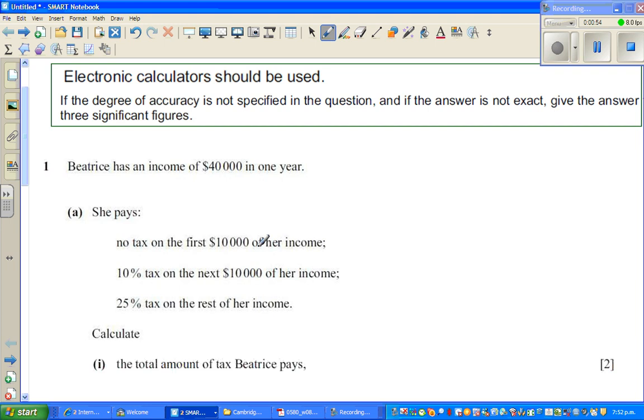The first $10,000 she pays no tax, it's tax-free. So if $10,000 is non-taxable, the taxable income is $30,000. Out of this $30,000, she pays 10% on the first $10,000.